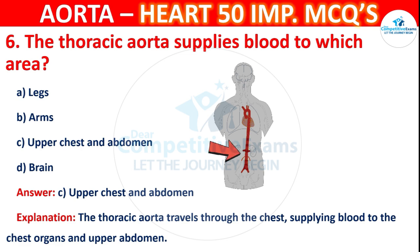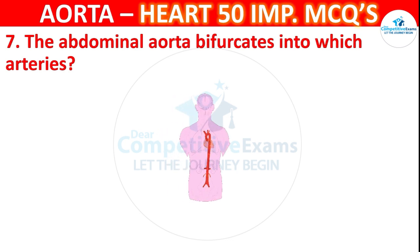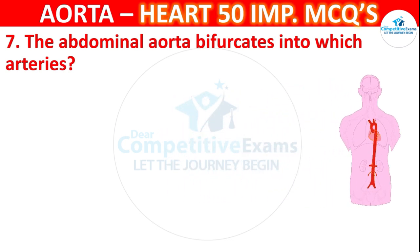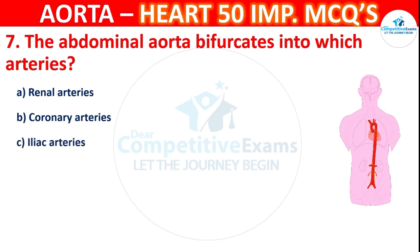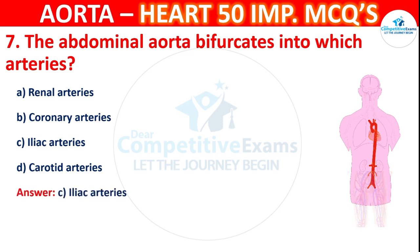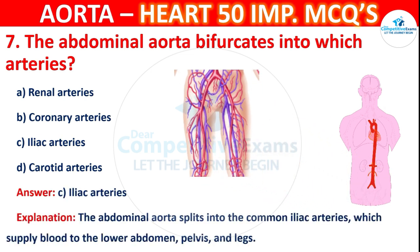Question number 7: The abdominal aorta bifurcates into which arteries? The correct answer involves the common iliac arteries, which supply blood to the lower abdomen, pelvis, and legs.